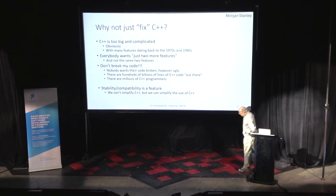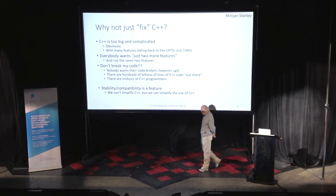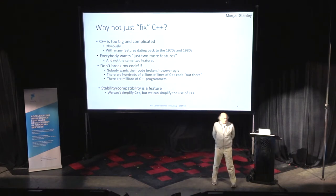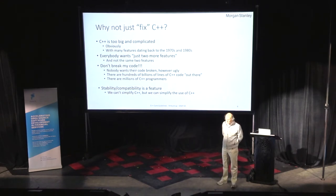So the question I get very often is: why don't you just fix C++? Make it simpler and nicer. And of course I know how to do that. However, that would break a lot of people's code. So the story goes C++ is too complicated — agreed — so simplify it and give me just two more extra features, and whatever you do, don't break my code. This is impossible.